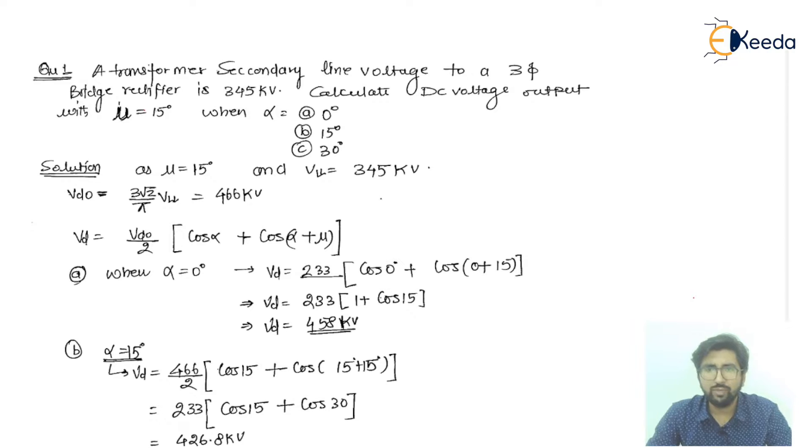So one by one we will start. This is numerical number one which is shown here. I am starting with the transformer secondary. We will have the transformer secondary where it is connected, or you can say the six pulse converter, because on the primary side we have the main supply, on the secondary side we have the converter. So line voltage of the bridge rectifier is equal to 345 kV.